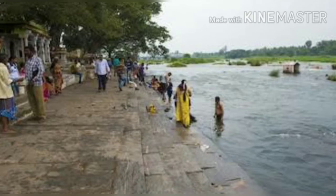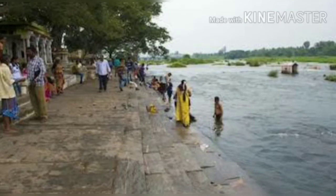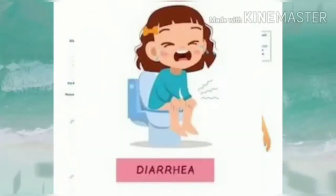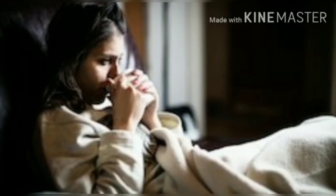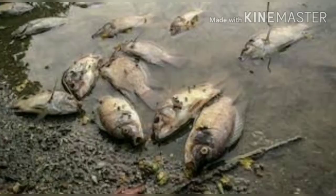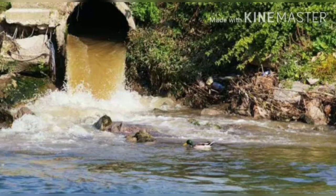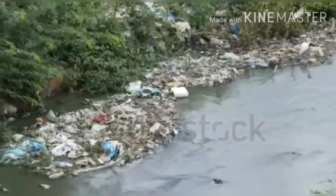Polluted water causes diseases like cholera, diarrhea, and dysentery, and sometimes even death. Not only humans, but fish, water animals, and water plants are also affected by polluted water. So we should not dump garbage or industrial waste into water. We should not wash animals or clean clothes and vessels in water sources.